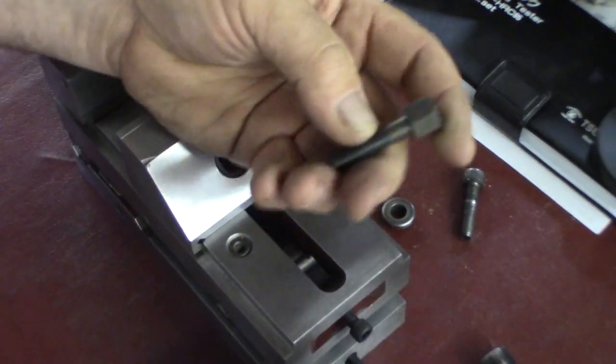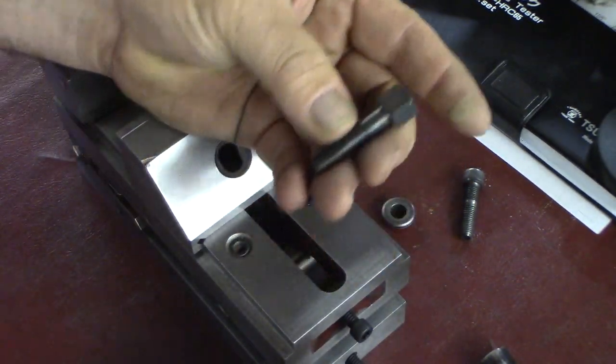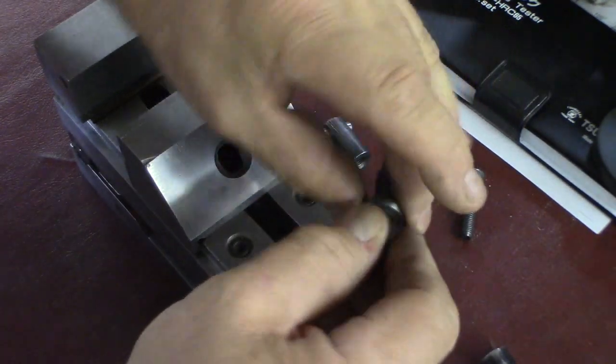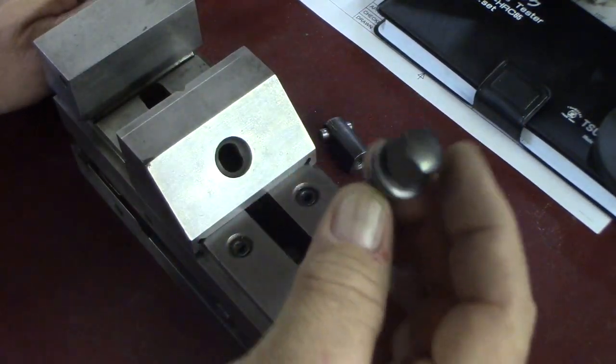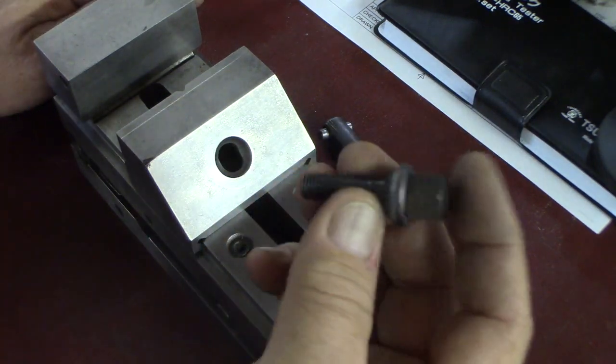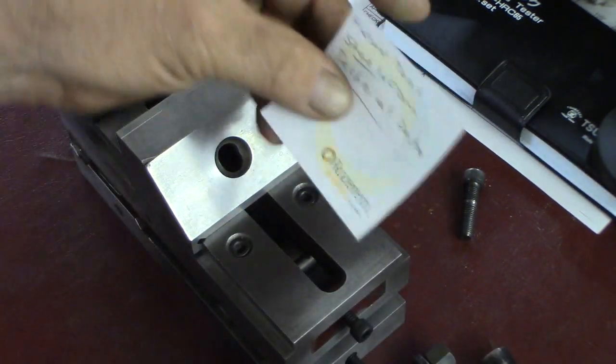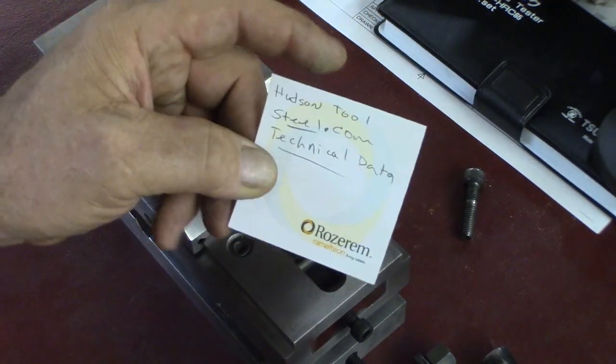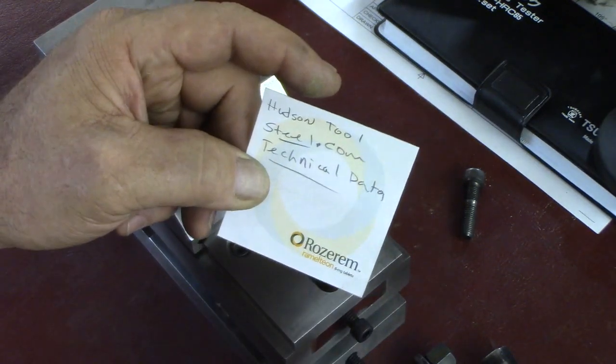Then I heat treated it. I made this out of W1 and heat treated it. In doing this, I thought I'd look up the specs about the temperature for W1 and all that stuff. I found a really good website: HudsonToolSteel.com, all one word, HudsonToolSteel.com.